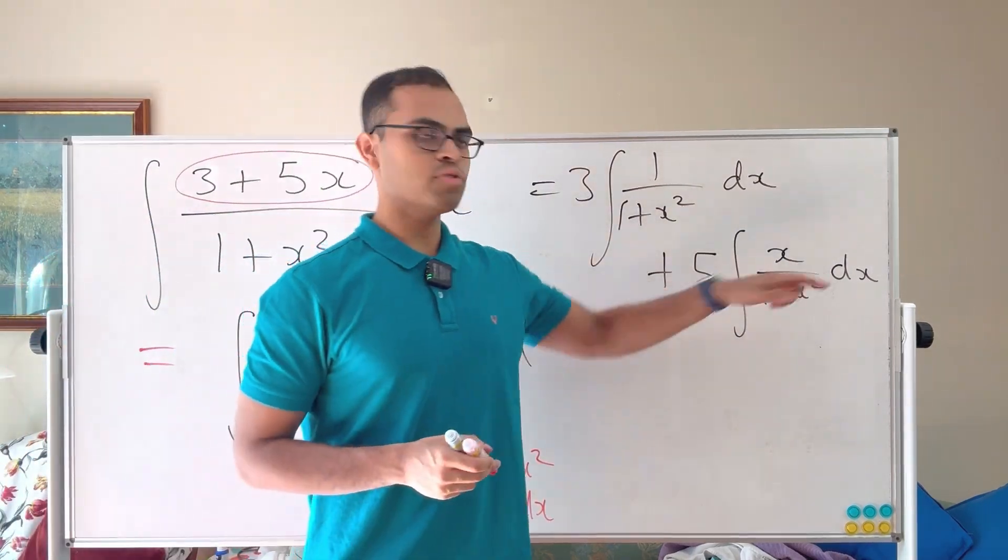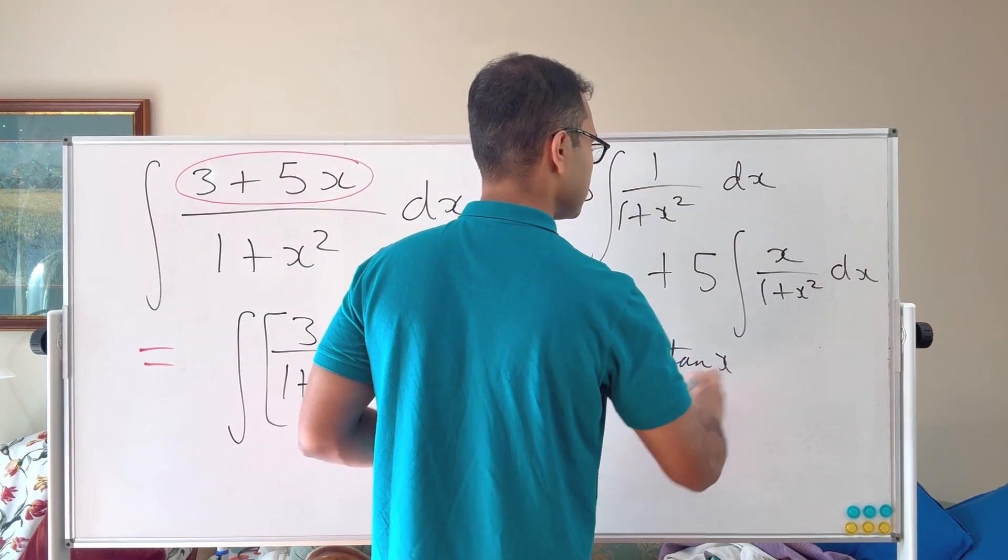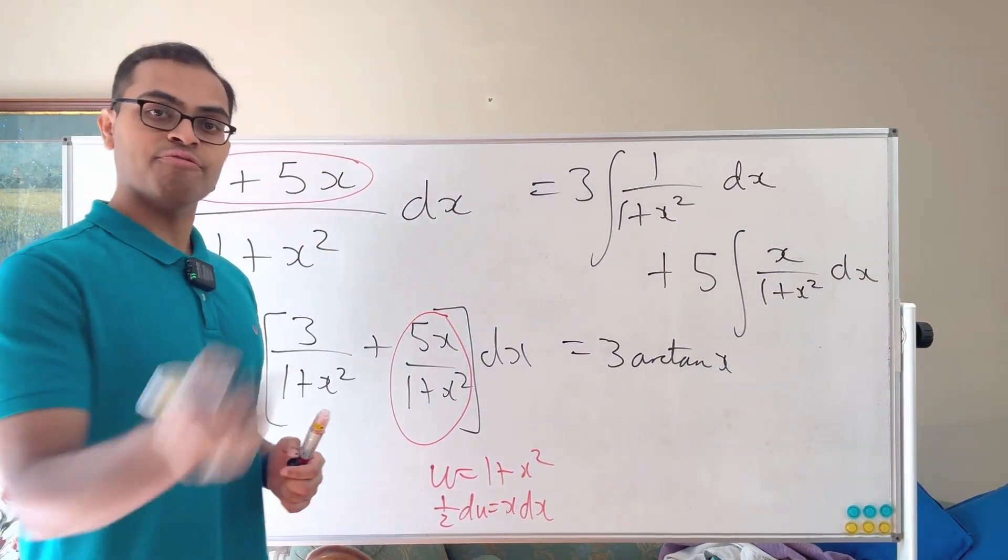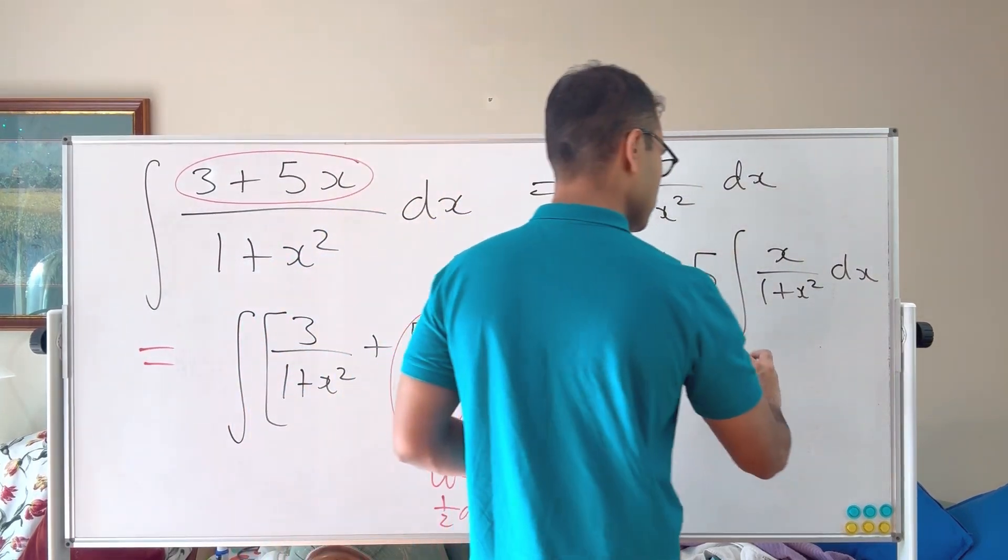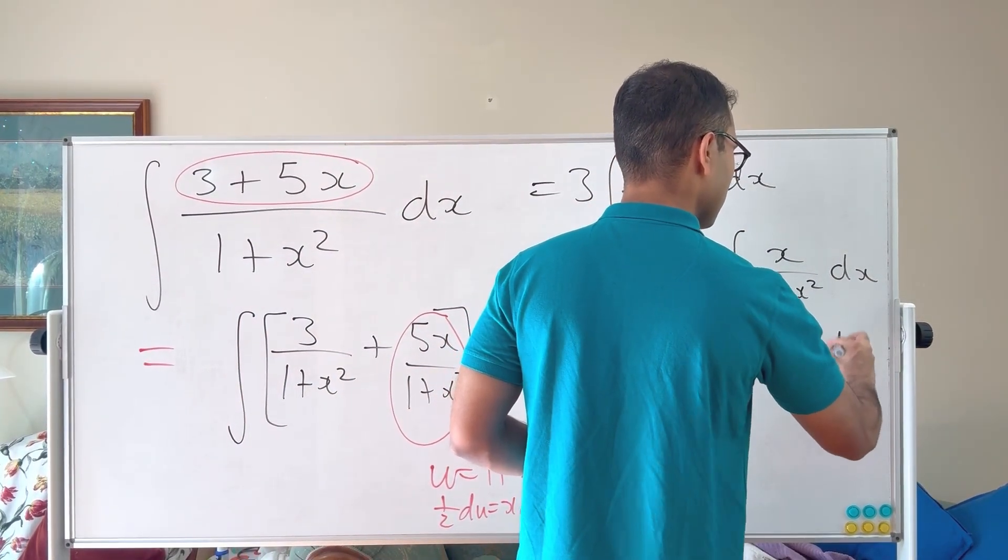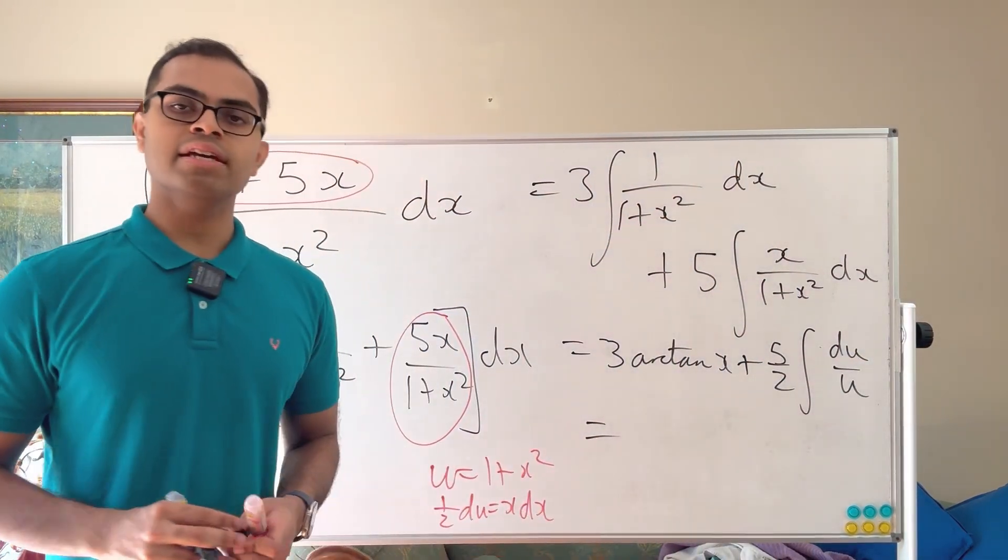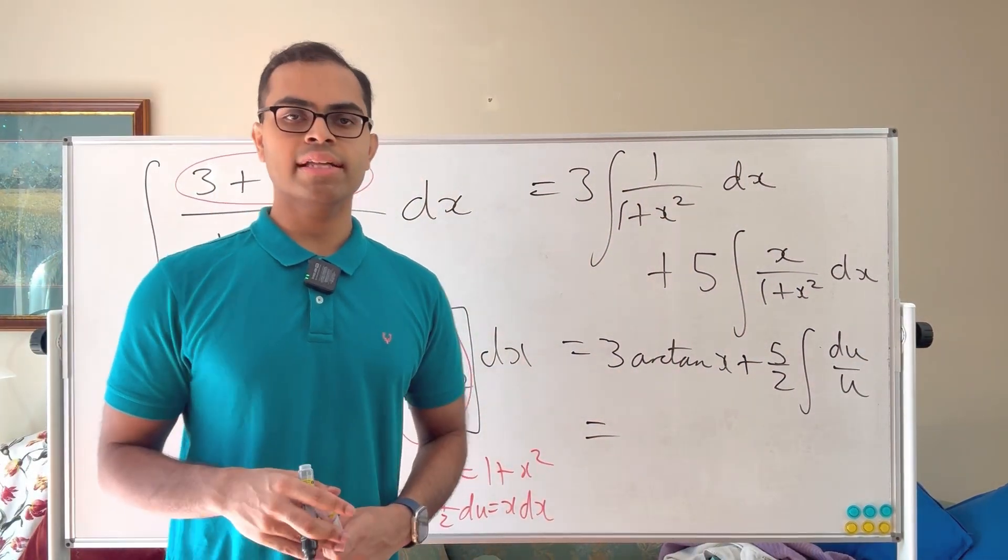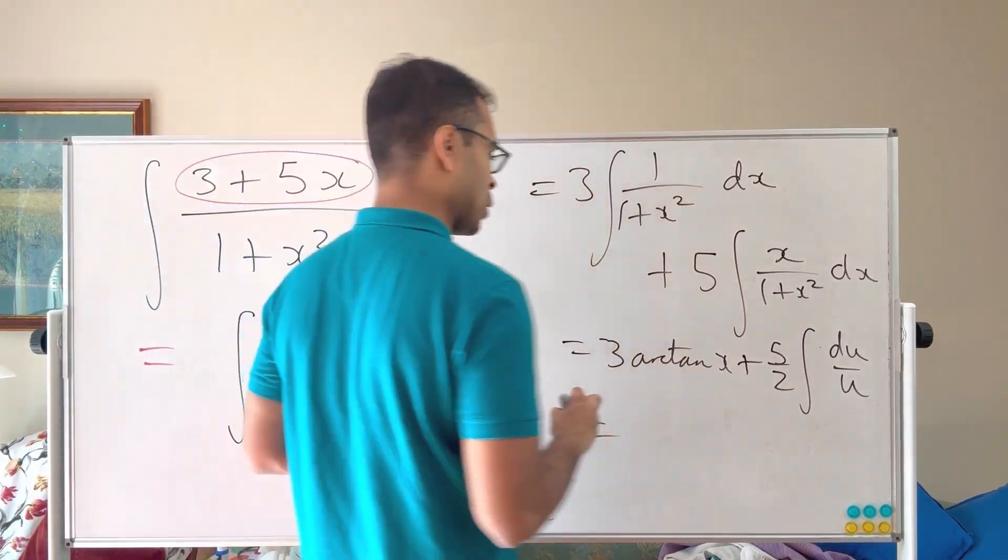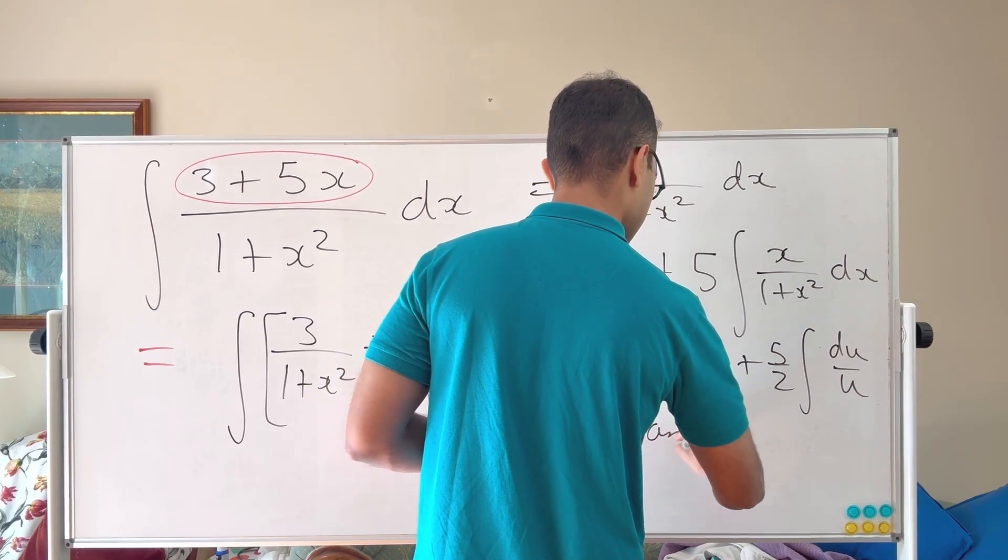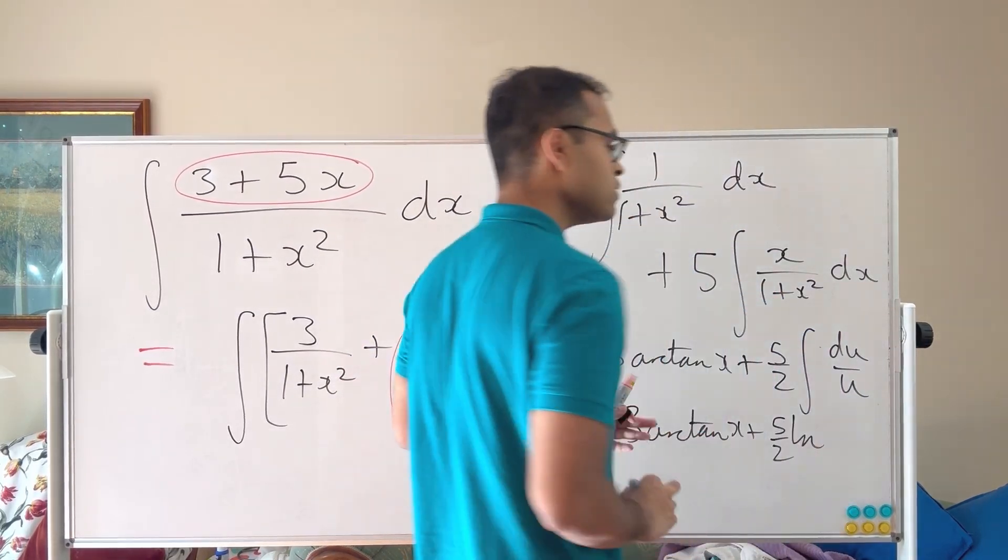So our x dx here becomes 1 half du. So you can write this as 3 arc tan x plus 1 half du is x dx. So 5 over 2. 1 half comes out. So you get 5 over 2. So plus 5 over 2 times the integral of du over u. And of course the du over u is going to be, it's a famous integral, it's log. That's another one to know. That's much more important even than the arc tan one. So we get log absolute value u plus a constant.